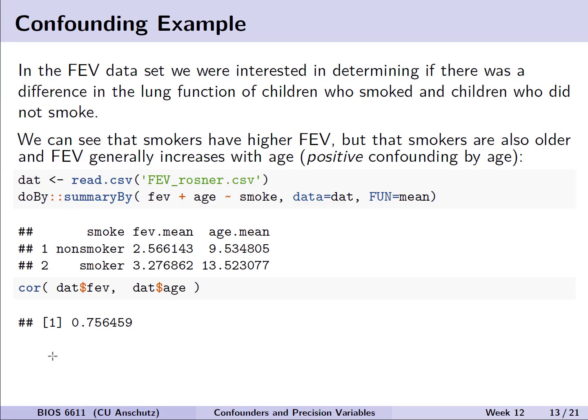Let's walk through an example of evaluating confounding using the FEV data set. We're interested in whether there is a difference in lung function (FEV) for children who smoked versus those who did not. We can see that smokers in general have a higher FEV from our summary output in R. We can also see that on average, smokers tend to be older as well, suggesting possible positive confounding by age — supported by a Pearson correlation of 0.756 between age and FEV.